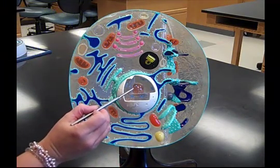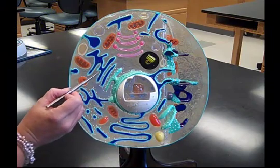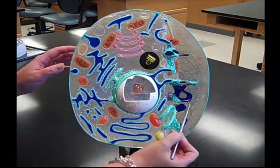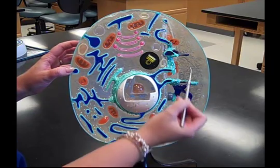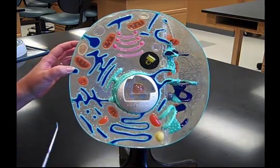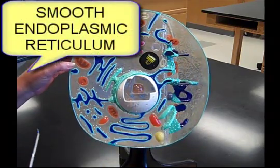If we find some of this membrane without the bumps, so here we see two-dimensionally, and here we see three-dimensionally, this dark blue structure without the white ribosomes, that's smooth ER, smooth endoplasmic reticulum.